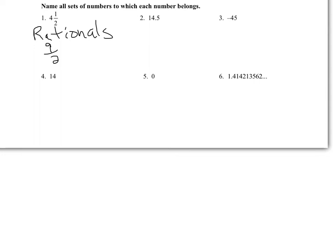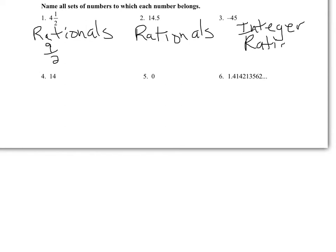14.5 — it's a decimal, so it can't fall under wholes or integers, but it can fall under rationals. Negative 45 is an integer because it's the opposite of a whole number. And the minute you write down integer, you can also automatically write down rational.